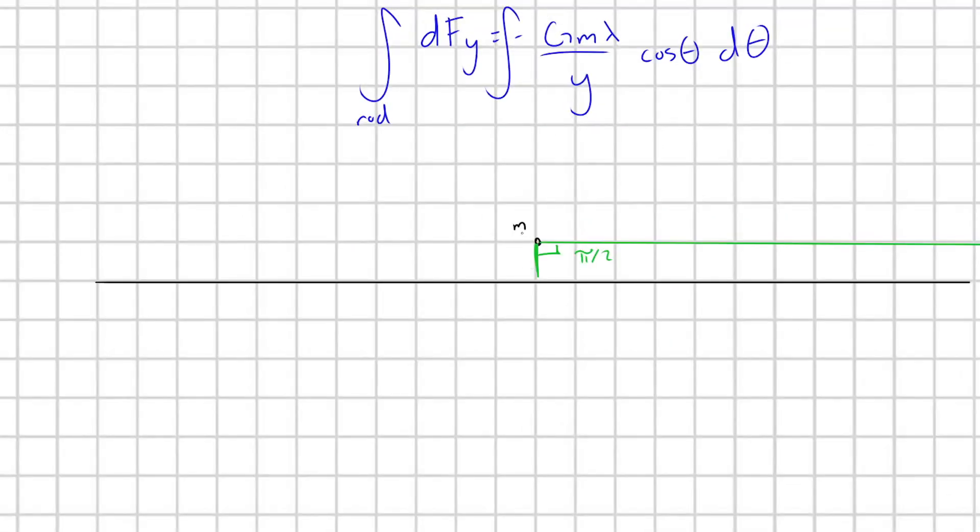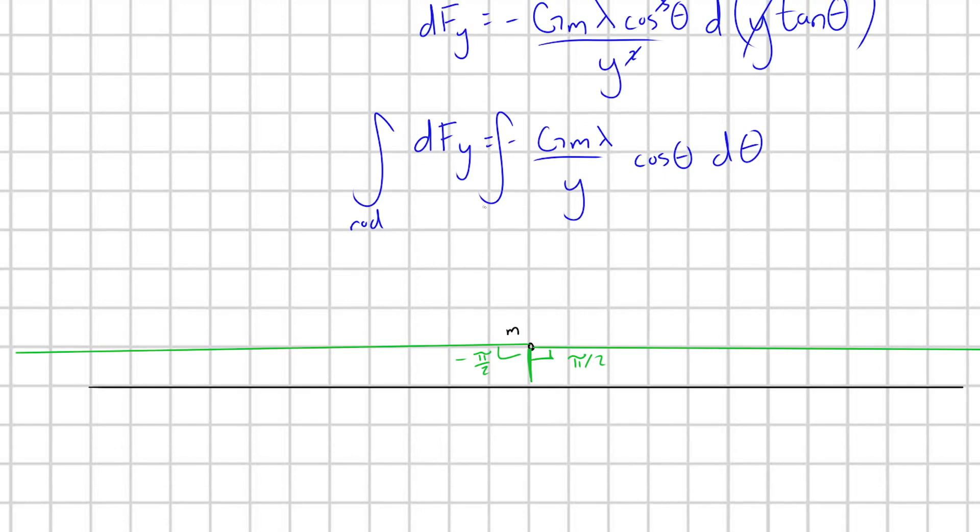Does that make perfect sense? So our theta is going to need to range from minus pi over 2 radians to pi over 2 radians.